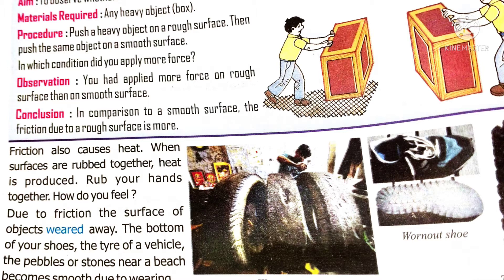Did you know we walk with the help of friction? When we walk, between our foot surface and the floor surface, there exists a frictional force which helps us walk without slipping. How do we write? Writing is also because of friction. There exists friction between the tip of the pen and the paper, and the frictional force between these two surfaces is what allows us to write.